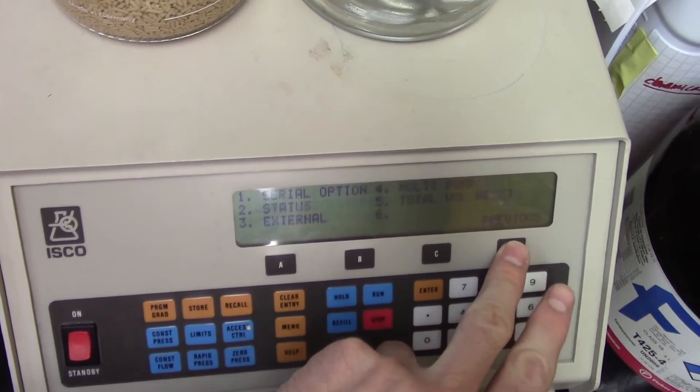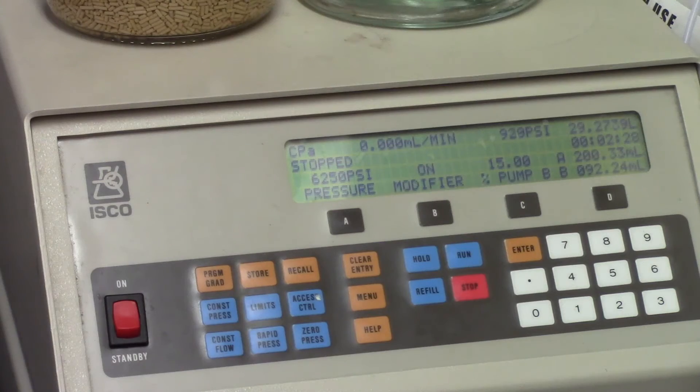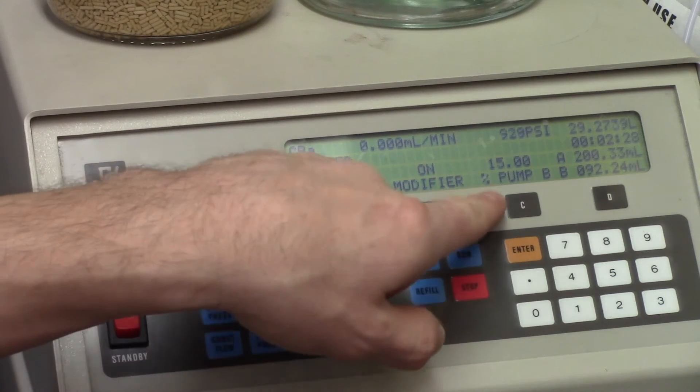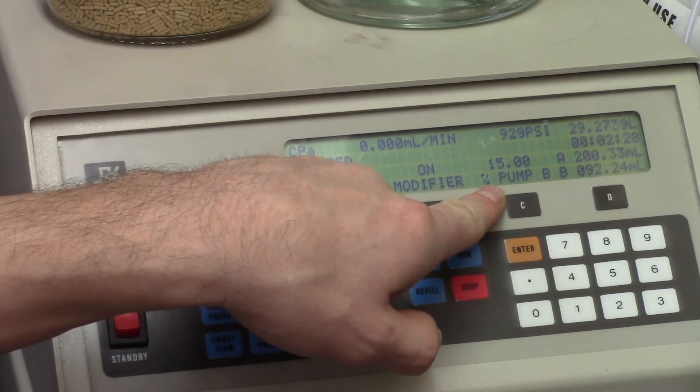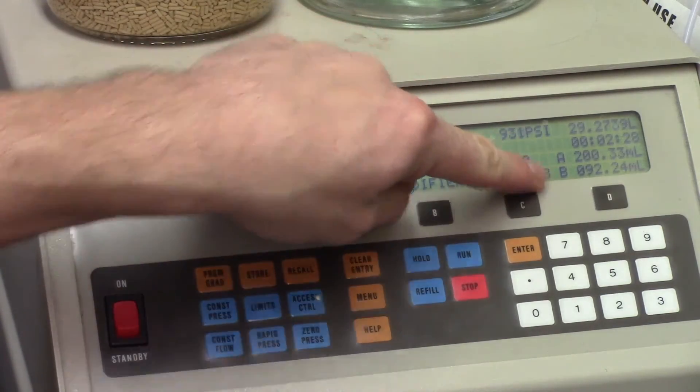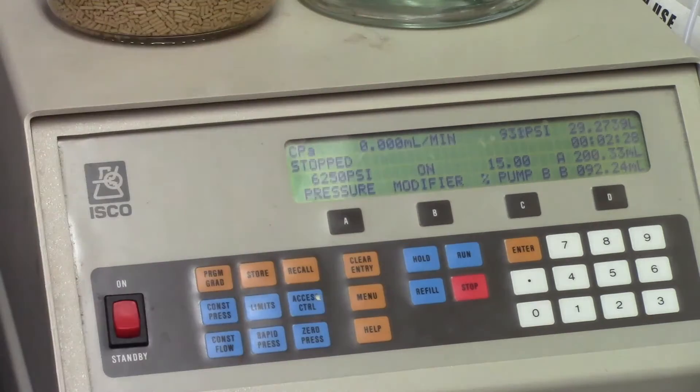This brings you back to the home panel, and now you can use both pumps in unison. The home panel is slightly different in modifier mode. It shows the set pressure, whether the modifier pump is on or off, the modifier percentage, as well as the CO2 in pump A and modifier in pump B. You can also see the flow rate, current pump A pressure, and extraction time.